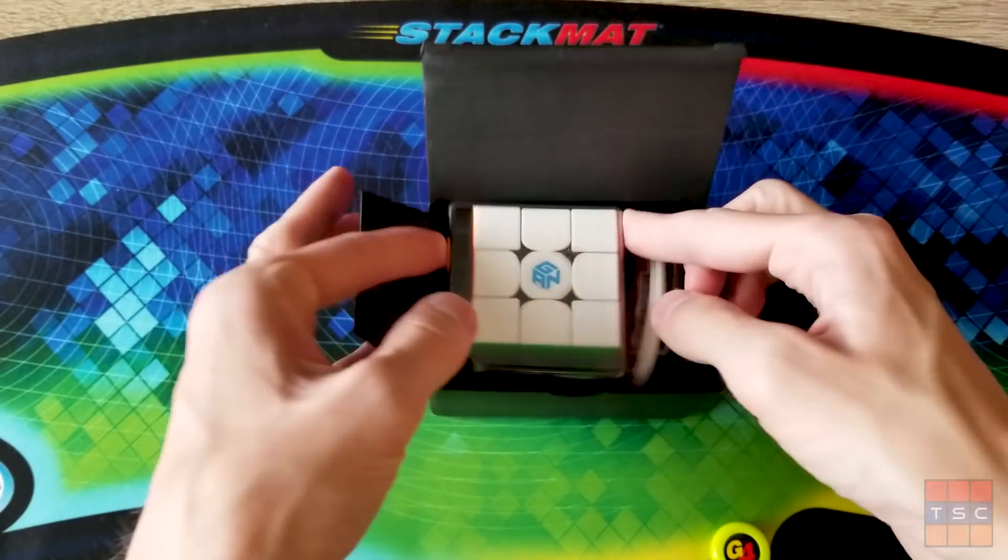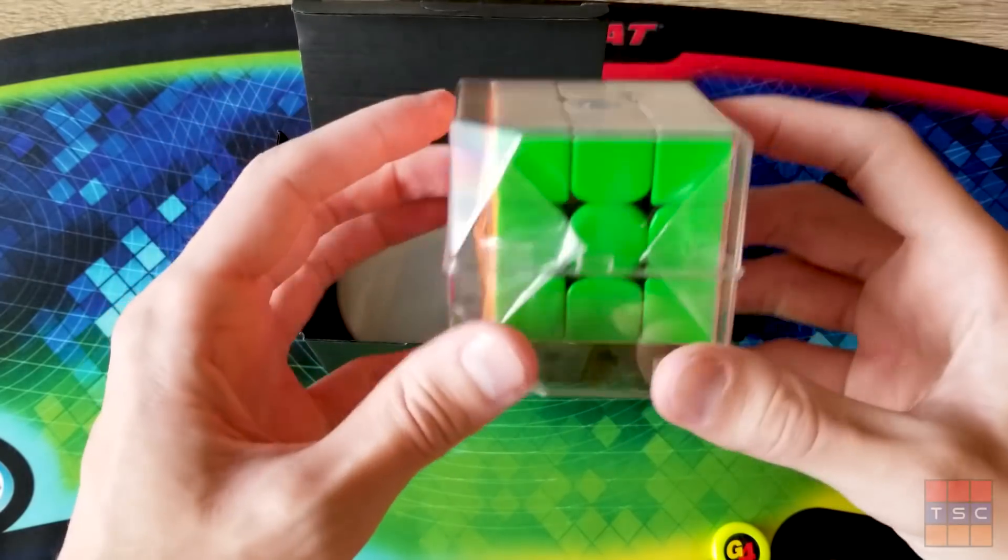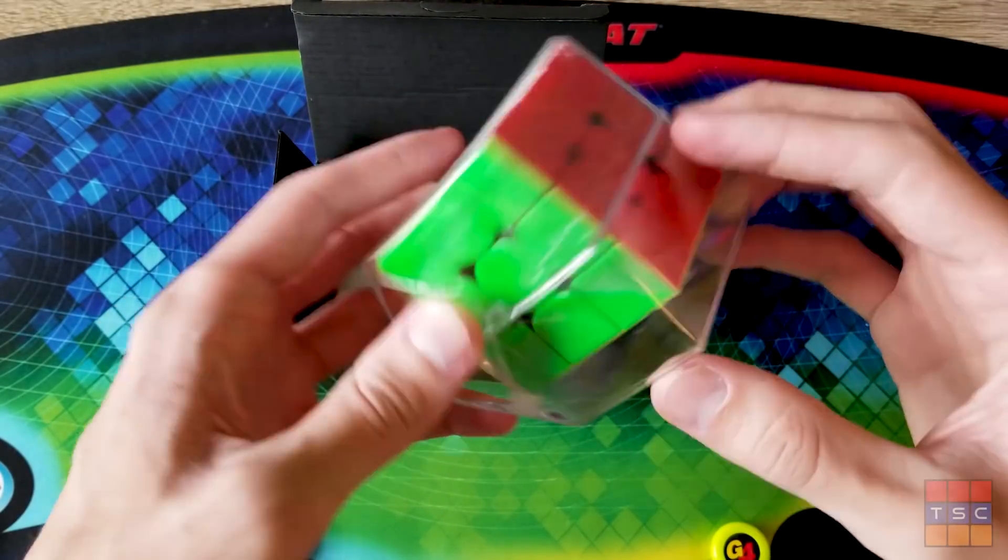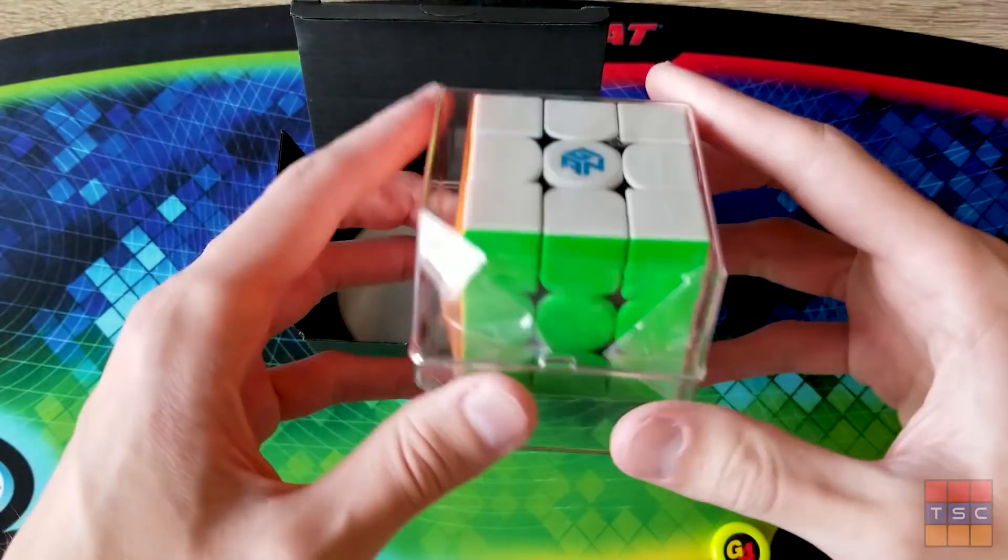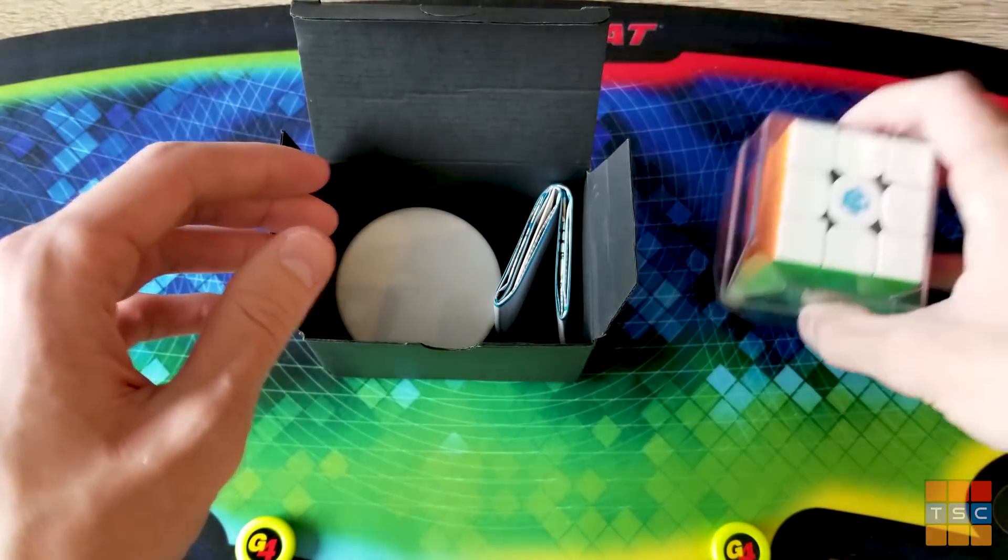Okay, so first thing we have is the puzzle itself and it comes in a neat little case like this. I gotta say it is really weird seeing a GAN puzzle in stickerless. It's gonna take some getting used to.